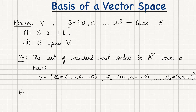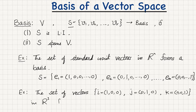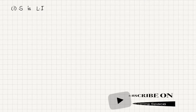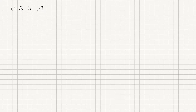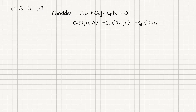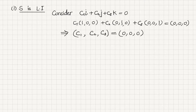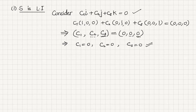Let me show this in particular for R³. First, we show that the set S = {i, j, k} is linearly independent by considering the linear combination equal to the zero vector in R³, which has three zero components. Since two vectors are equal only when their corresponding components are equal, equating components shows all coefficients must be zero. Thus the set S is linearly independent.